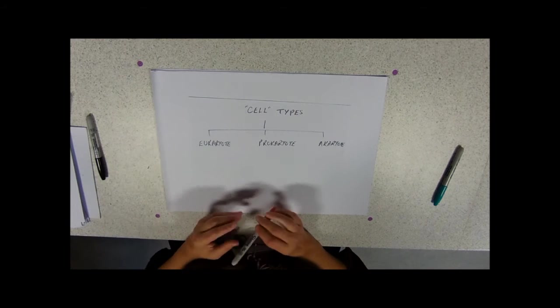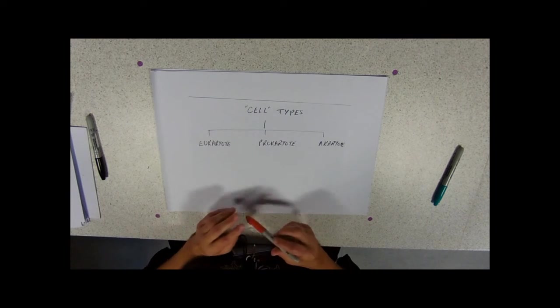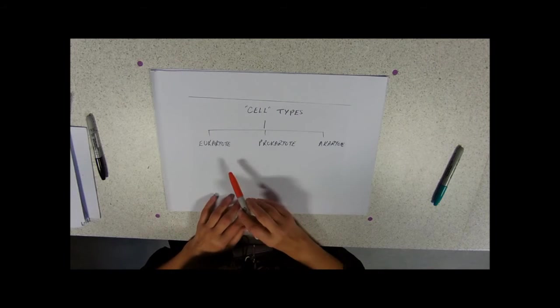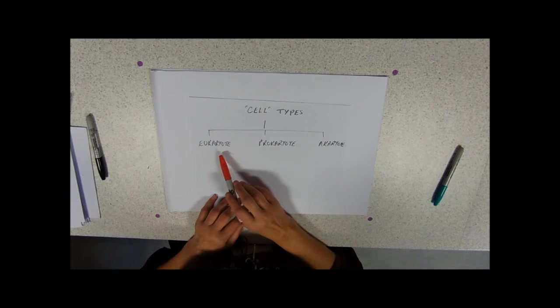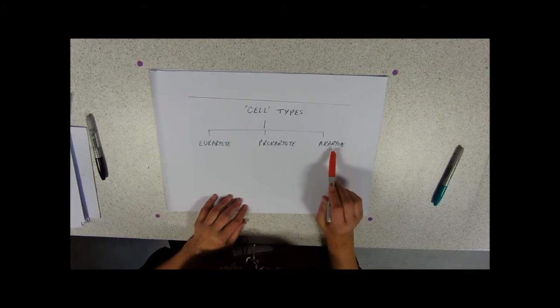So we have three basic models of organisms cells. We've got eukaryotes, prokaryotes and akaryotes.